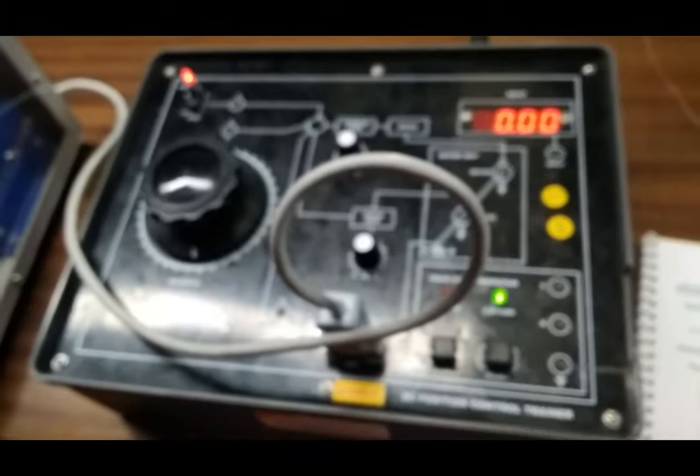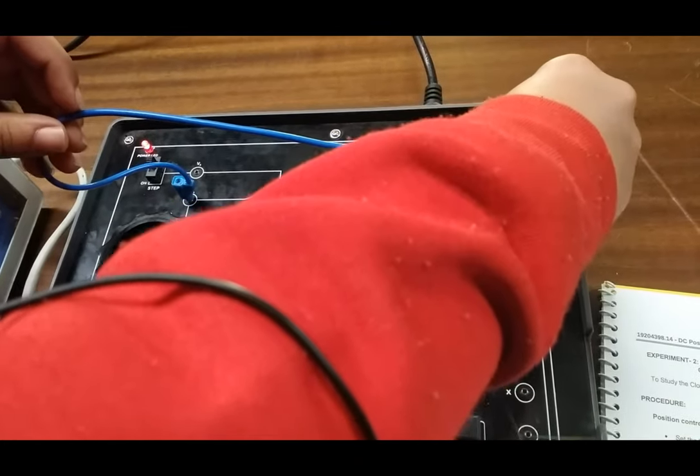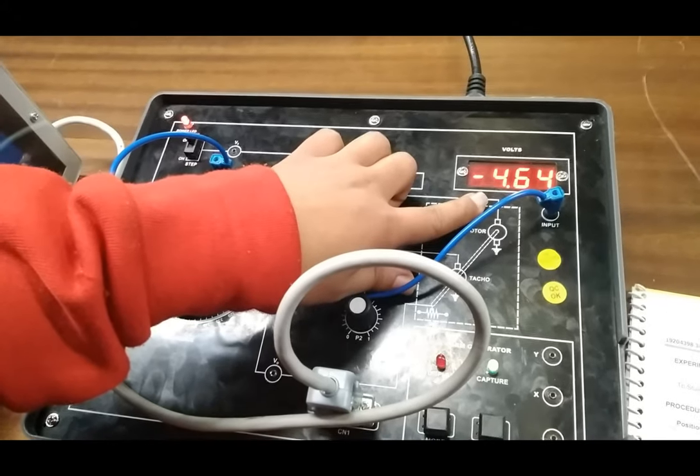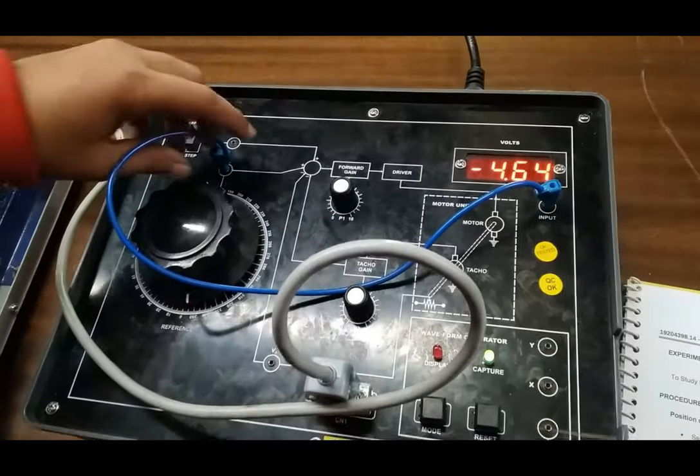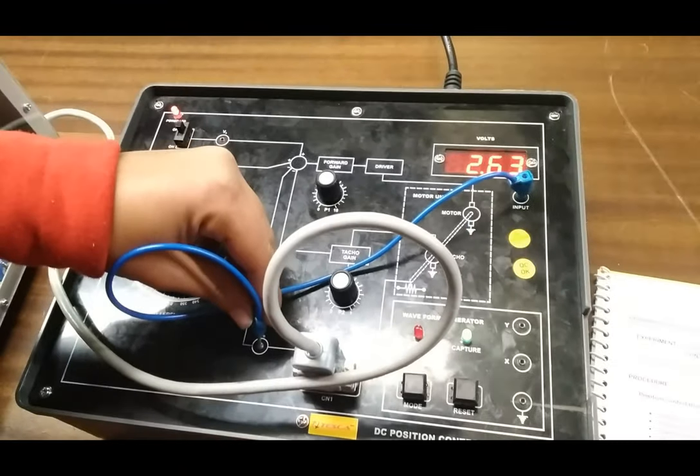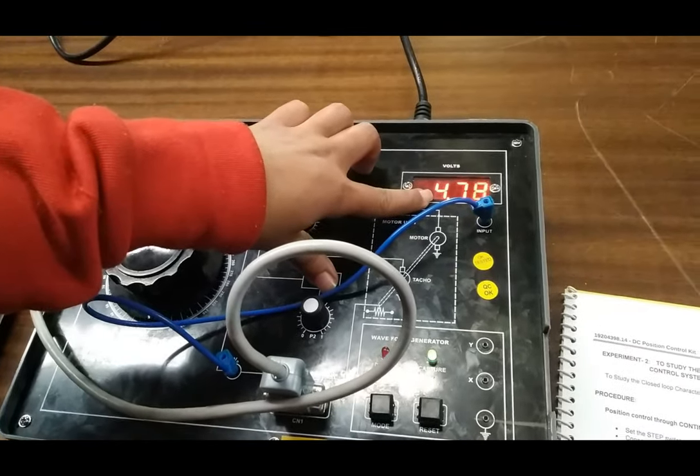For the VR value, we connect the VR terminal with the input terminal. The reading shows minus 4.64. For V0, it shows 4.72.